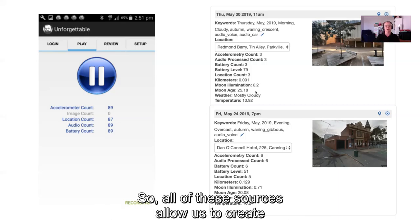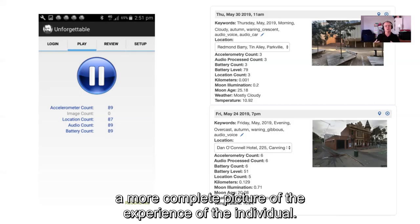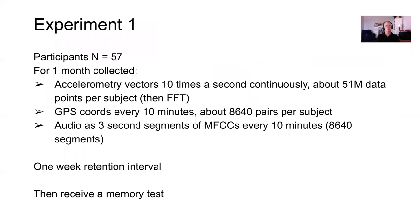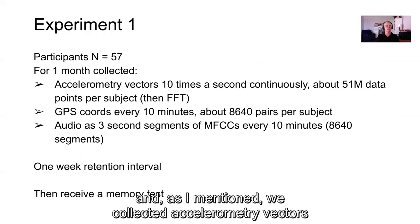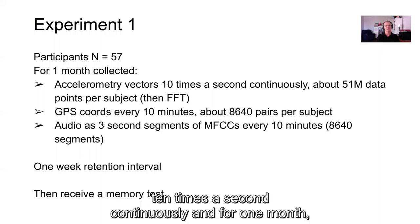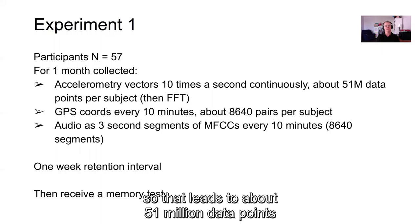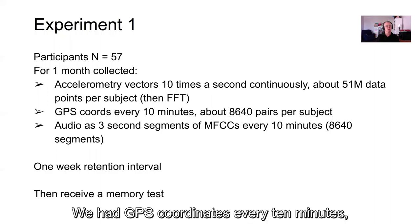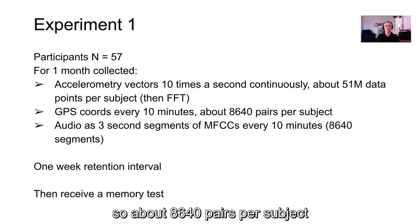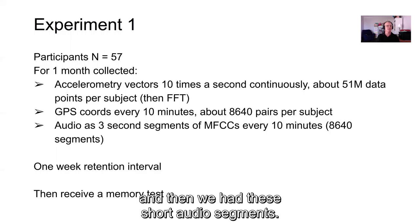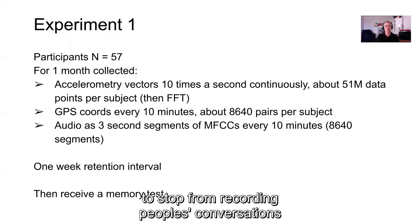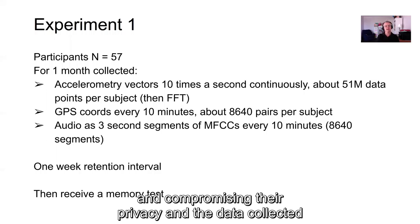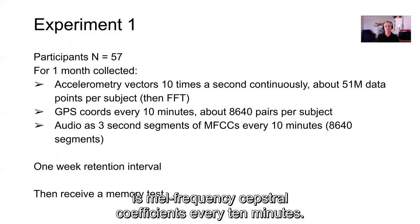All of these sources allow us to create a more complete picture of the experience of the individual. In our first experiment, we had 57 participants. We collected accelerometry 10 times a second continuously for one month — about 51 million data points per participant. We had GPS coordinates every 10 minutes, about 8,640 pairs per subject, and short audio segments recorded as mel-frequency cepstral coefficients every 10 minutes — kept short to avoid recording conversations and compromising privacy.